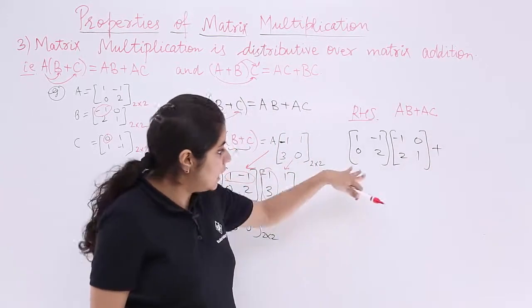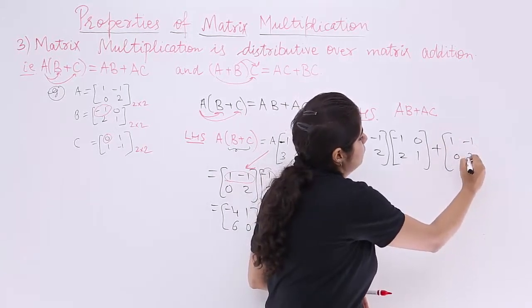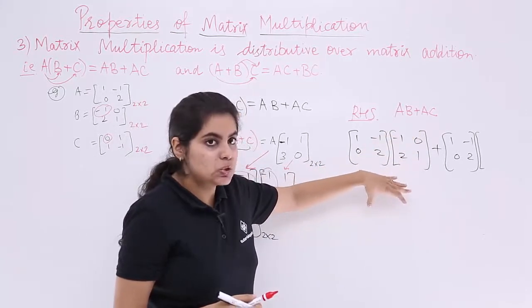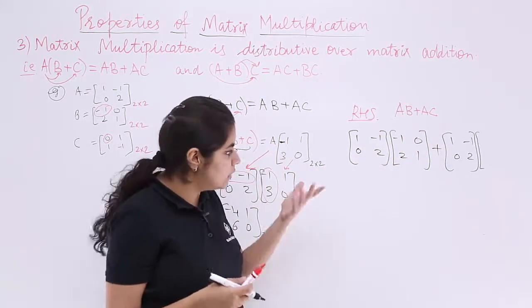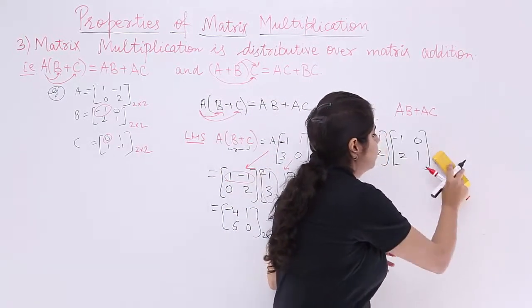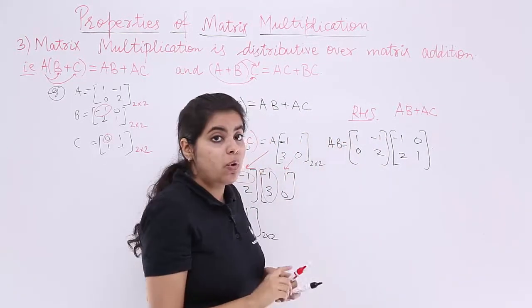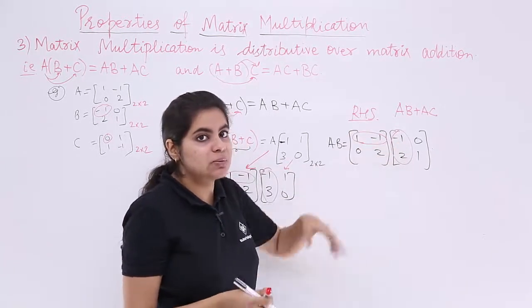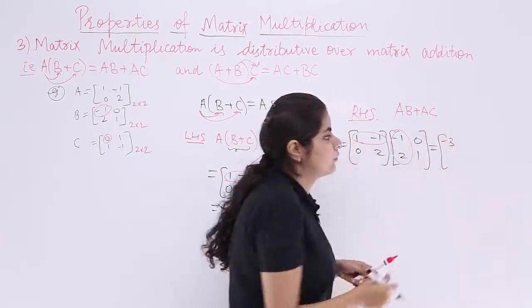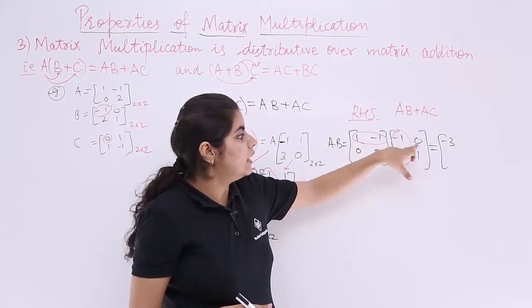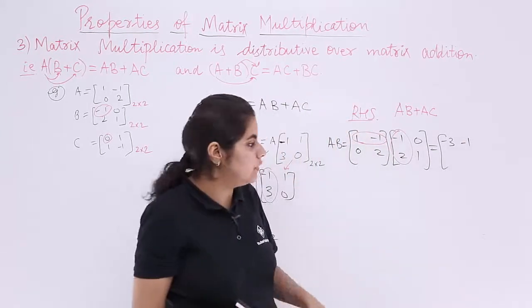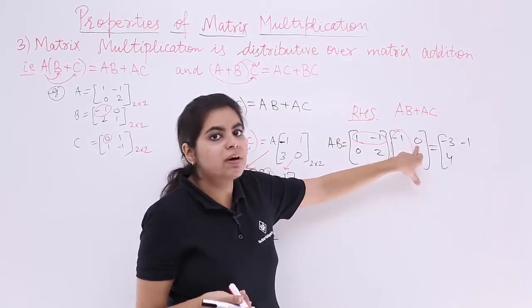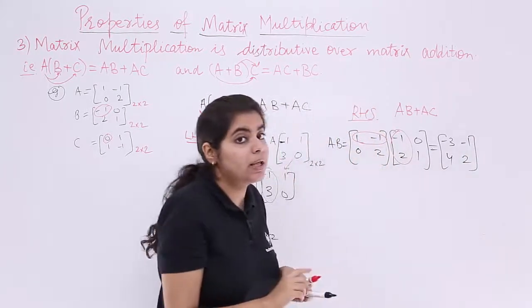Computing AB: first row, first column: 1×(-1) = -1, (-1)×2 = -2, so -3. First row, second column: 1×0 = 0, (-1)×1 = -1, so -1. Second row, first column: 0×(-1) = 0, 2×2 = 4, so 4. Second row, second column: 0×0 = 0, 2×1 = 2, so 2. AB = [-3, -1; 4, 2].